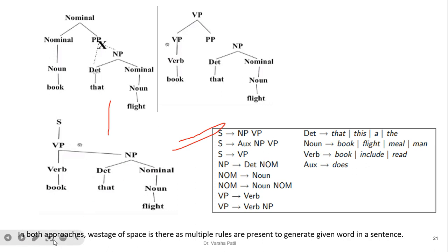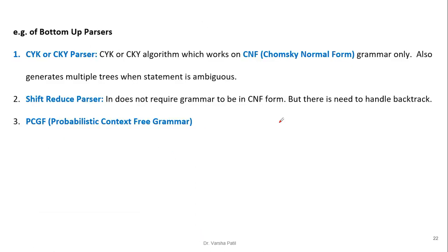If we follow an ad hoc approach the problem is wastage of space, as multiple rules are generated for a given word in a sentence. Bottom-up parsers include: the CYK (CKY) parser, which works on Chomsky Normal Form grammar and also generates multiple trees when the statement is ambiguous; the shift-reduce parser, which does not require grammar in CNF form but needs to handle backtracking; and the probabilistic context-free grammar, which assigns a probability to each parse tree so it is better suited for selecting the final parse tree.